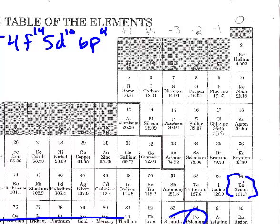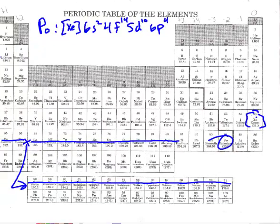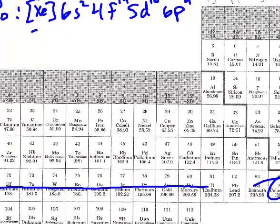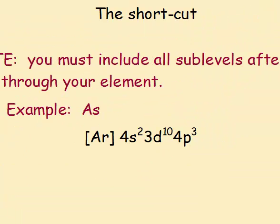Once again, the noble gases are used because they represent a filled energy level. So by putting that in brackets, I did not have to do the first 54 electrons here. I just had to include everything after that until I got to the correct number for polonium. That's the shortcut configuration, and I guess that's it.